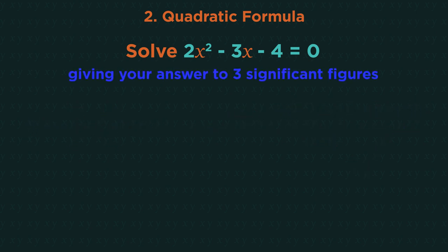If the question says giving your answer to three significant figures, or giving your answer to two decimal places, it means these quadratics cannot be factorised. So straight away look to use the quadratic formula.